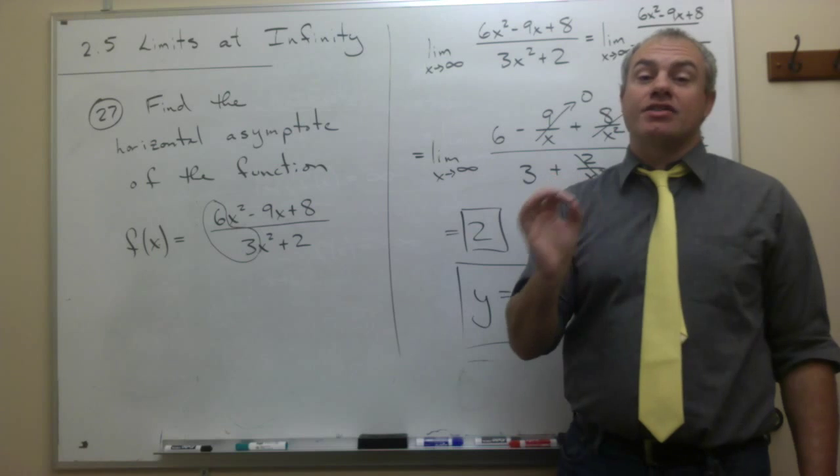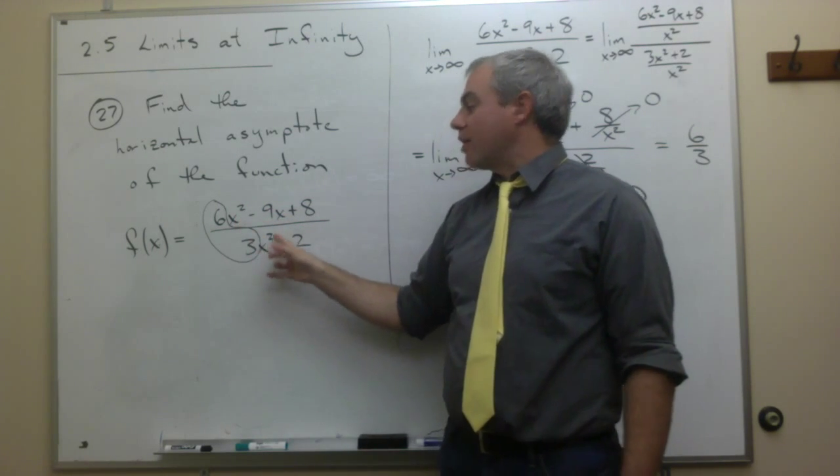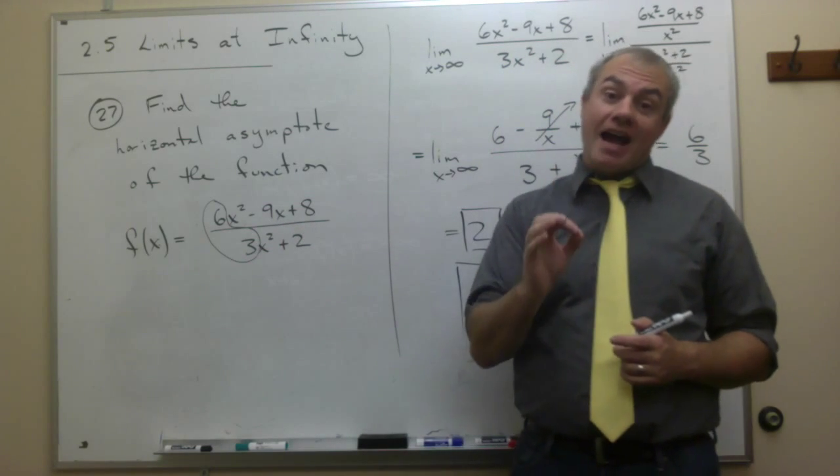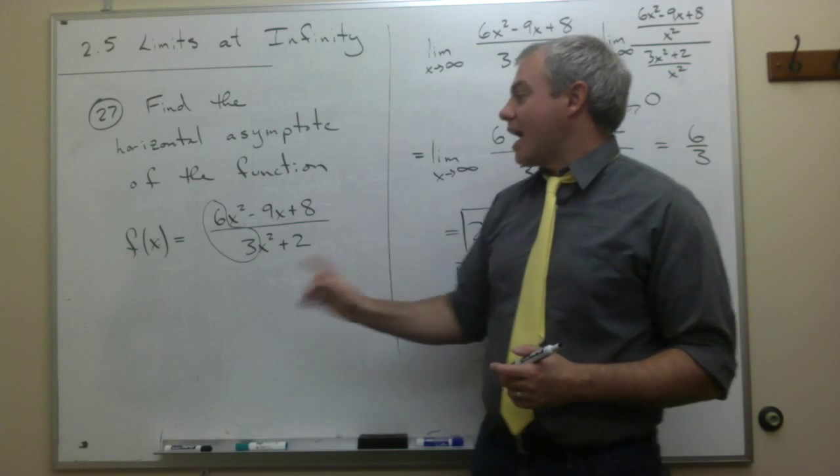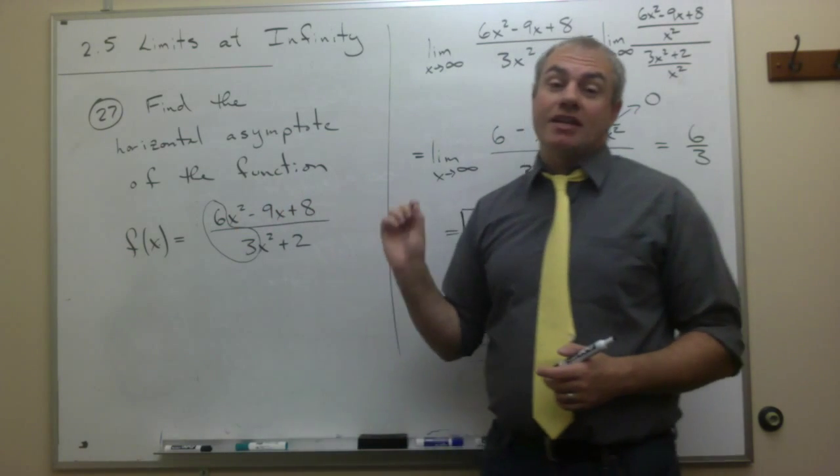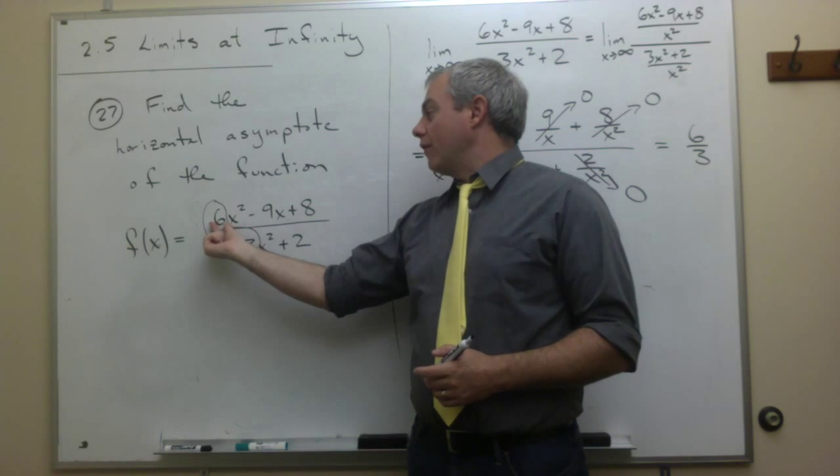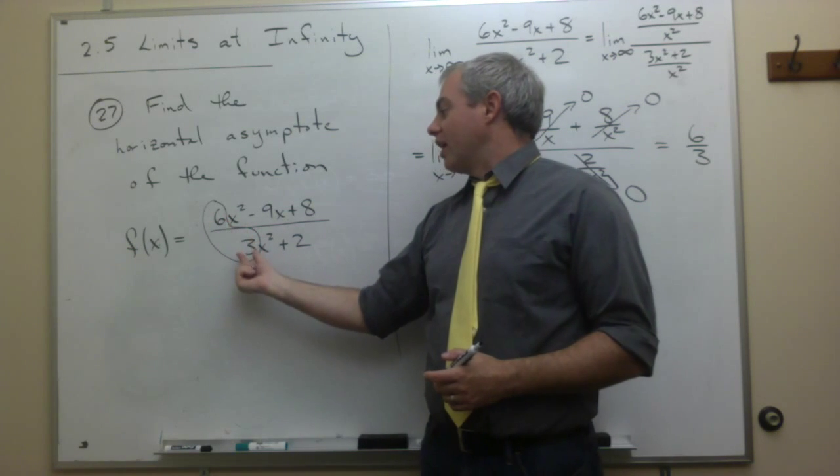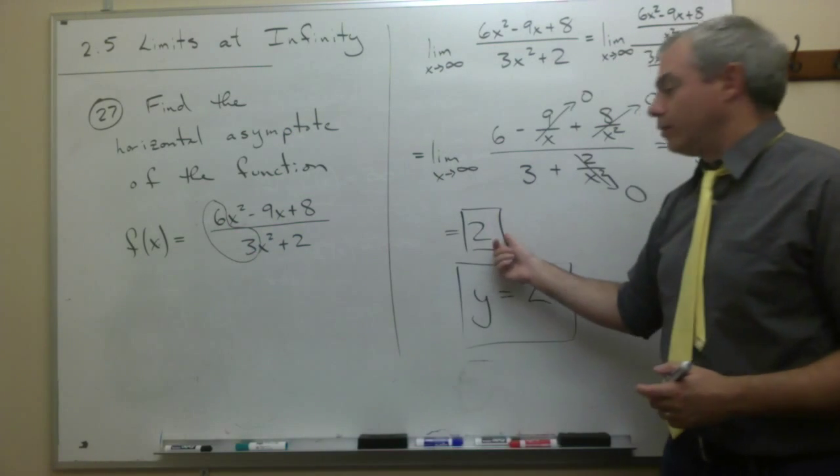If you recognize though that the power on the top, the highest power of x on top and the highest power of x on the bottom are exactly the same, then you could use the trick of just saying, if I take the limit as x goes to infinity, then what I'm going to be left with is the coefficient of the x squared divided by the coefficient of the x squared, or 6 over 3, which is 2.